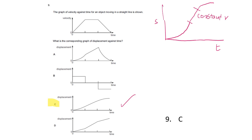Looking at the velocity-time graph: we have increasing velocity, then constant velocity, then decreasing velocity. On the displacement-time graph we look for: a curve upwards showing increasing velocity, a straight diagonal line showing constant velocity, then a curve levelling off showing decreasing velocity. The graph that shows all three of those features is graph C. It's helpful to break it into three sections: curving up in the first section, straight line in the second section, and curving over in the third.